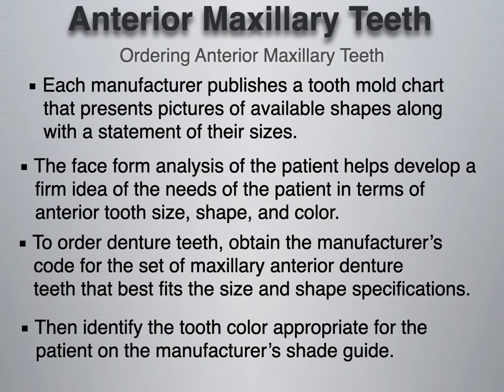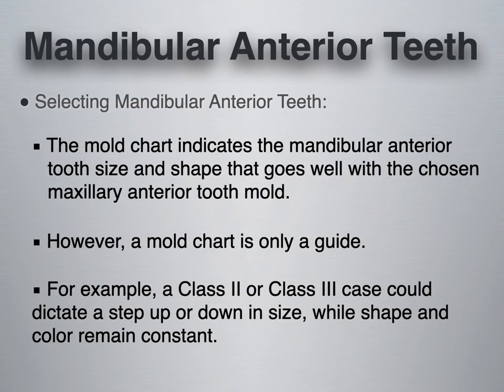Identify the tooth color and the mold chart does the rest. For mandibular anterior teeth, the mold chart indicates what anterior tooth size and shape goes well with the chosen maxillary. The mold chart is only a guide, and there are ways to mix and match different teeth — you are not locked into exactly what it tells you. A Class II or Class III case could dictate a step up or down in size while shape and color remain constant. It is up to you as a technician to decide what teeth would best fit the arch forms.